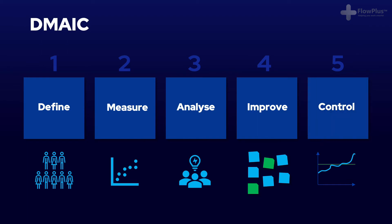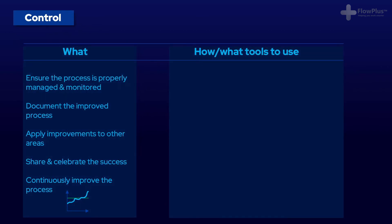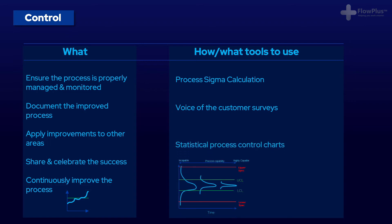Finally, moving to control — the final phase closes the feedback loop and ensures the results and impacts are measured and controlled. Tools that could help here include process sigma calculations, a rerun of customer surveys to find out what the response was, or statistical process control charts to measure the improvements. The key thing is to measure the KPI or process variable that was identified in the measure stage, because that allows a direct comparison.